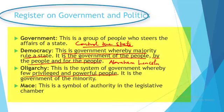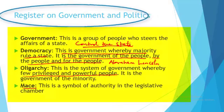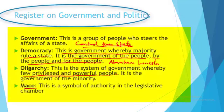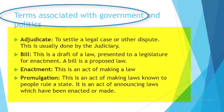Then we have the mace. The mace is a symbol of legislative authority. Without the mace's presence, there will be no legislative proceedings. In Gambia, for instance, there is a mace during parliamentary sessions in the legislative house. Then we have 'adjudicate,' which means to settle a legal case or dispute.